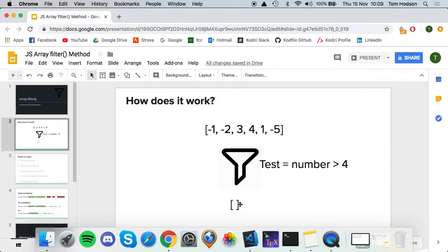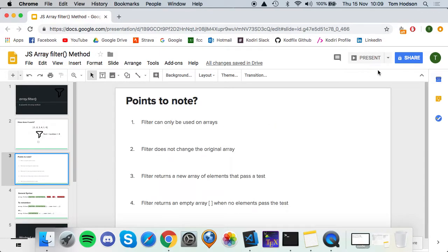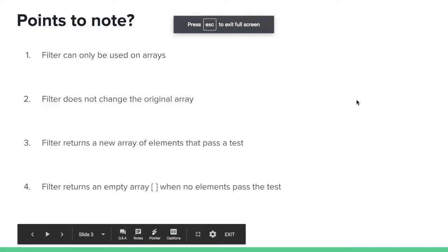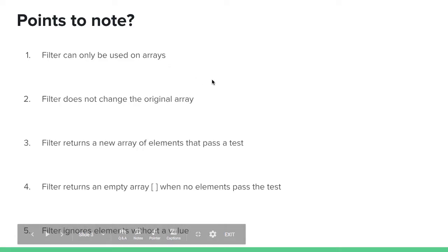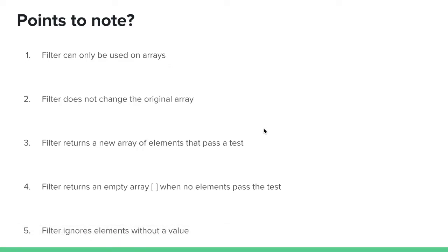Another difference is that filter returns every element that passes the test, whereas find only returns the first one. So, points to note: filter can only be used on arrays — it's an array method. It doesn't change the original array; it takes the original array and returns a new array with every element that passes the test you give it.